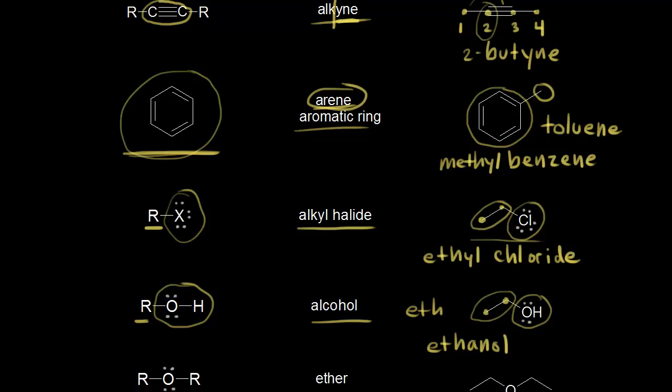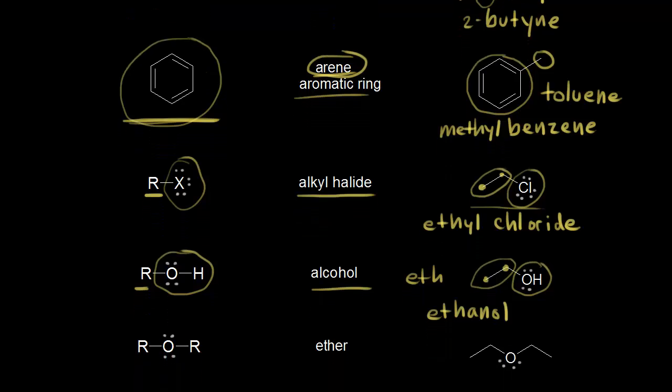Next we have an ether. An ether has an oxygen with an R group on either side. I'm sorry for the bad joke, but if it helps you remember that you have an R group on either side of your oxygen, it's worth putting in a bad joke into this video.